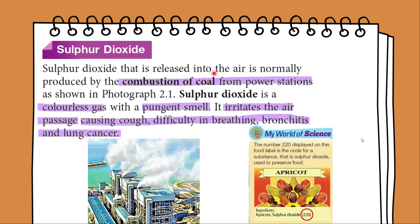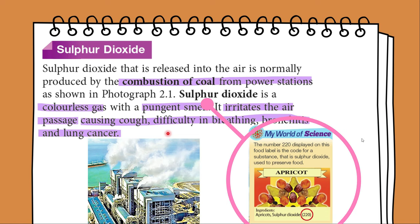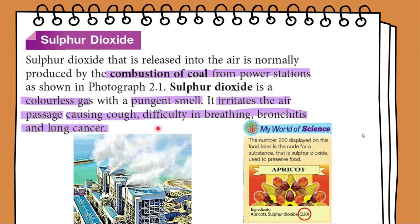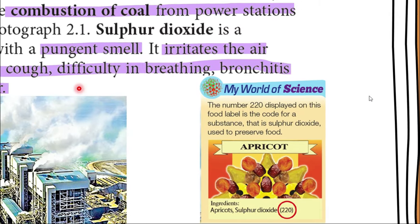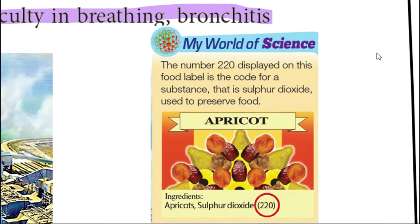Sulfur dioxide released into the air is normally produced by the combustion of coal from power stations. It is a colourless gas but comes with a pungent smell. It irritates the respiratory tract, causing cough, difficulty in breathing, bronchitis and lung cancer. Sulfur dioxide is also used in the food production sector as a preservative to prevent bacteria growth. It is usually used to preserve fruits after harvesting, but there are limits set for the amount allowed in food to protect consumers.